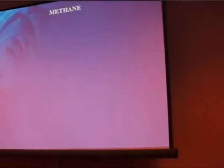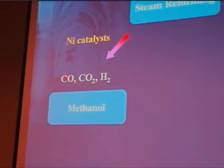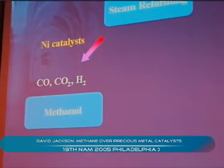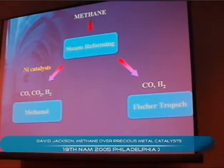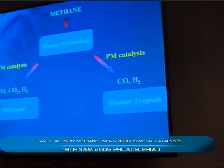We're going to start with methane. We can steam reform it, and currently we would normally use nickel catalysts and get a mixture of CO2 and hydrogen, which we could use for methanol synthesis. But if we want CO and hydrogen for Fischer-Tropsch, it's not clear we want nickel — we're probably going to want to use precious metal catalysts, and the literature is not full of information about reactions of methane over precious metal catalysts.